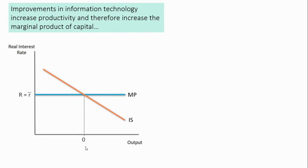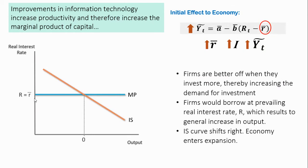The next scenario is that there are improvements in information technology which increase the marginal product of capital. From the IS equation, we can see that the change affects the marginal product of capital, denoted as R-bar. When MPK is higher than the real interest rate, firms are better off investing more because they can be profitable from additional investment. This stimulates investment demand, causing the IS curve to shift to the right, and the economy enters an expansion.